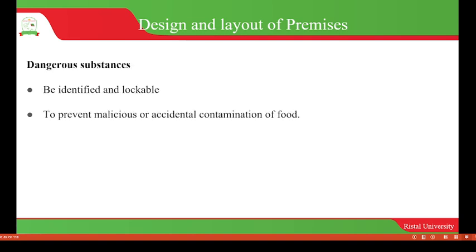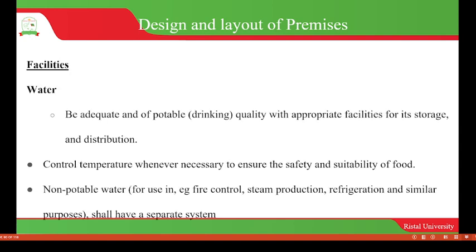Dangerous substances should always be identifiable, and if we are disposing of them, we can dispose of them in lockable equipment. This will help to prevent malicious or accidental contamination of food, because if we can identify the waste and the containers for keeping this waste, then malicious or accidental contamination of food by these dangerous substances will be prevented.